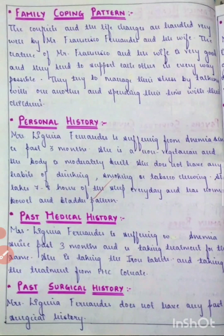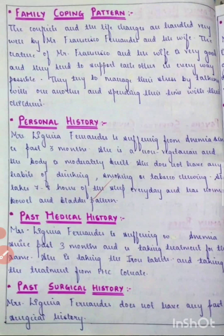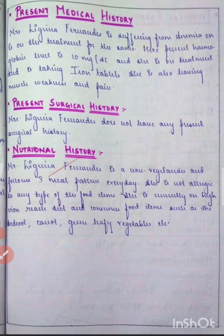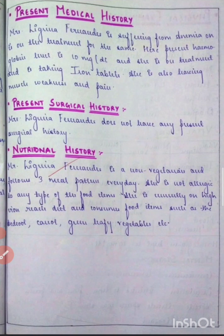Then comes the personal history, then past medical history — you have to mention from when the patient has had the disease condition and what treatment they are on. Then comes the past surgical history, and then present medical history: whether the condition has improved or deteriorated and what medications they are currently on.